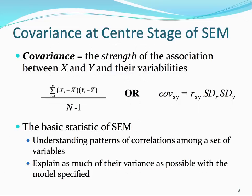At the heart of structural equation modeling is covariance. Covariance is the strength of the association between two variables as well as their variabilities. Essentially, covariance is an unstandardized correlation — it's unstandardized in the sense that we take into account the standard deviation of the two variables, and it's considered to be the basic statistic of structural equation modeling. This allows us to understand the different patterns of correlations among a set of variables in our model, as well as to explain as much of the variance as possible with the specified model.